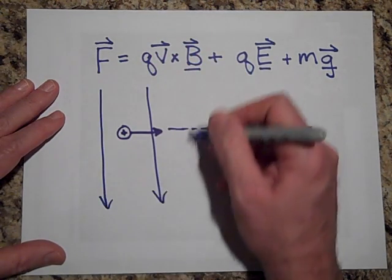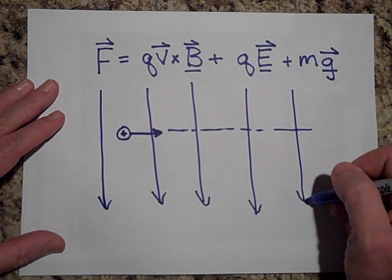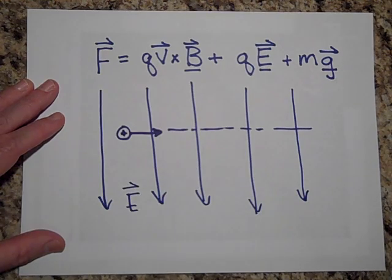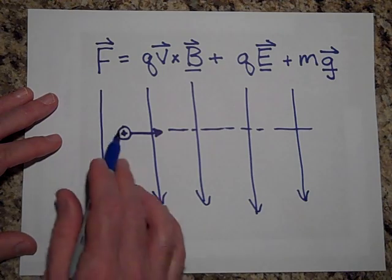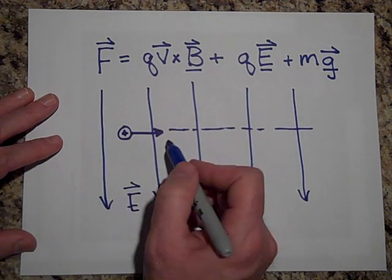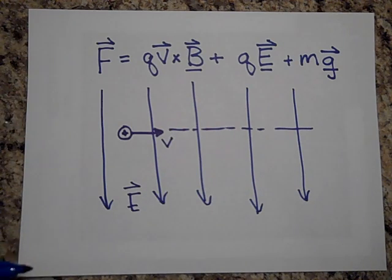Let's say if the electric field is this way, this is E, so that would push it down. We need the magnetic force to push it up so it can go straight. We'd like it to go straight.